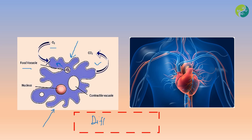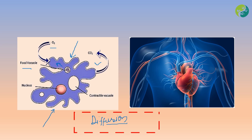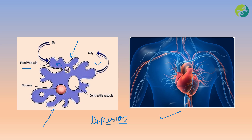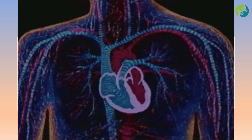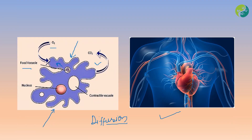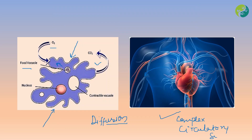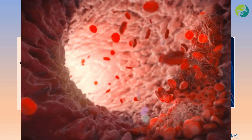When we talk about humans, it is a complex organism. Materials such as oxygen and nutrients have to travel for longer distances to reach the whole body, including the brain. Therefore, they require a complex circulatory system. The complex circulatory system includes the heart, the blood vessels, and the blood.